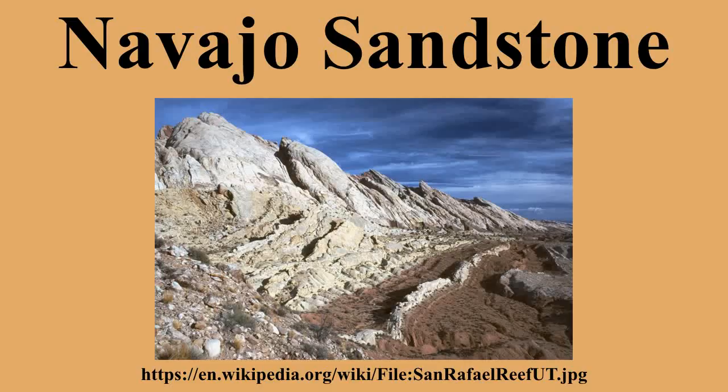The Navajo Sandstone was originally named as the uppermost formation of the La Plata Group by Gregory and Stone in 1917. Bakery assigned it as the upper formation of Glen Canyon Group in 1936. Its age was modified by Lewis and others in 1961. The name was originally not used in northwest Colorado and northeast Utah, where the name Glen Canyon Sandstone was preferred. Its age was modified again by Padion in 1989.